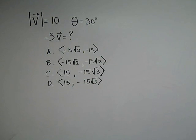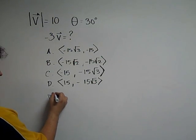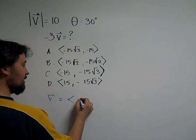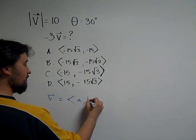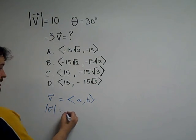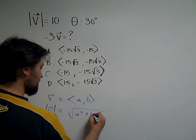Looking at this question, what you need to know is that for any kind of vector, let's just say we have a vector V, which has the form of A, B. The magnitude of any vector is going to be just Pythagorean theorem, square root of A squared plus B squared.